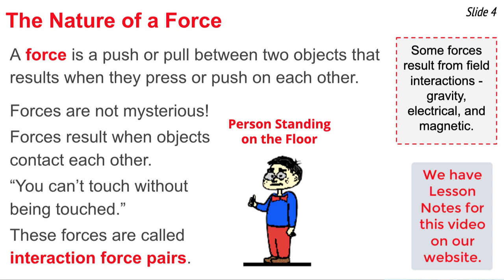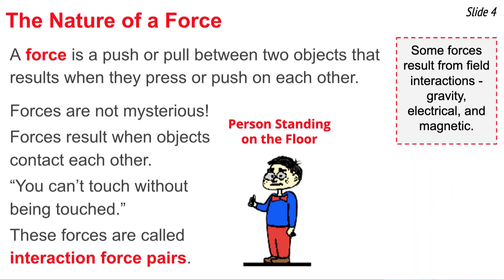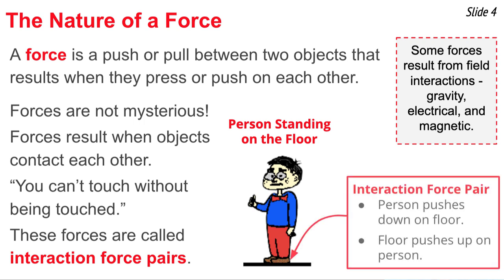Consider a person standing on the floor. As that person stands on the floor, there's contact between the person's feet and the floor, and that contact results in an interaction force pair. We would describe it like this: the person pushes down on the floor, and the floor pushes up on the person. These two forces act on different objects in opposite directions and are of equal strength. That's Newton's Third Law.